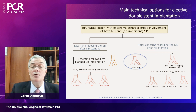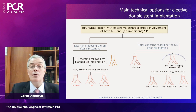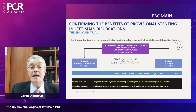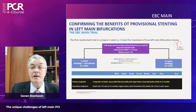If there is major concern about losing the side branch, options include double kissing crush (DK crush), with results from the DK-CRUSH 5 trial, or inverted provisional — stenting from the left main into the side branch, most frequently the circumflex, followed by POT, distal rewiring, dilatation, and then inverted culotte, inverted T, or inverted TAP. More data will come from the EBC MAIN study, organized by the European Bifurcation Club, which compares one- versus two-stent strategy in true left main bifurcation lesions, targeting 450 patients with true distal left main bifurcation and both circumflex and LAD greater than 2.75 mm.